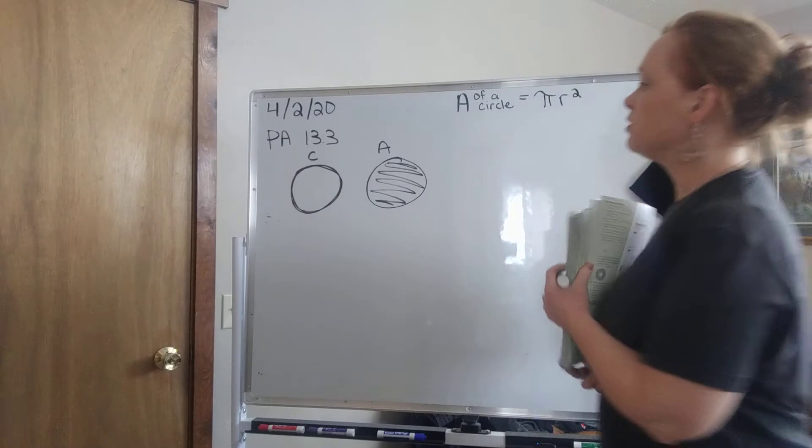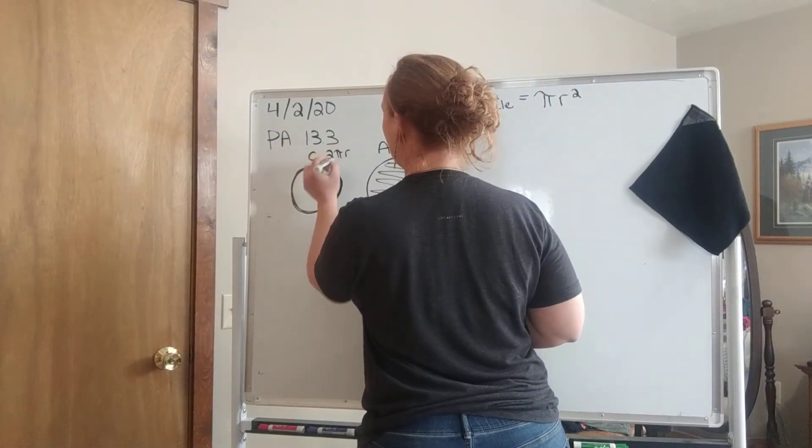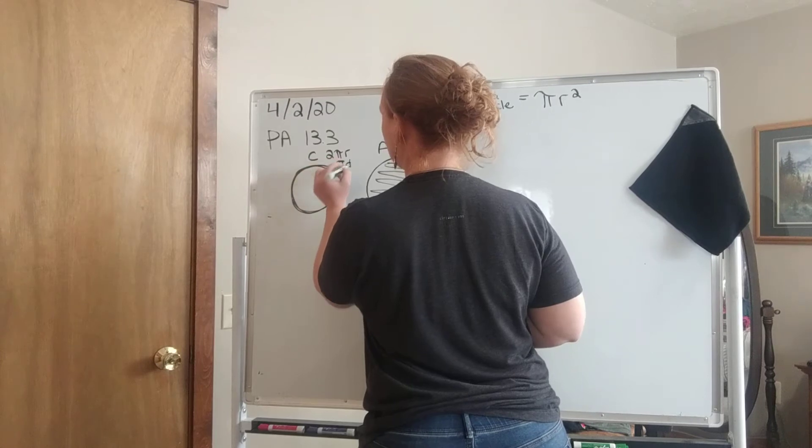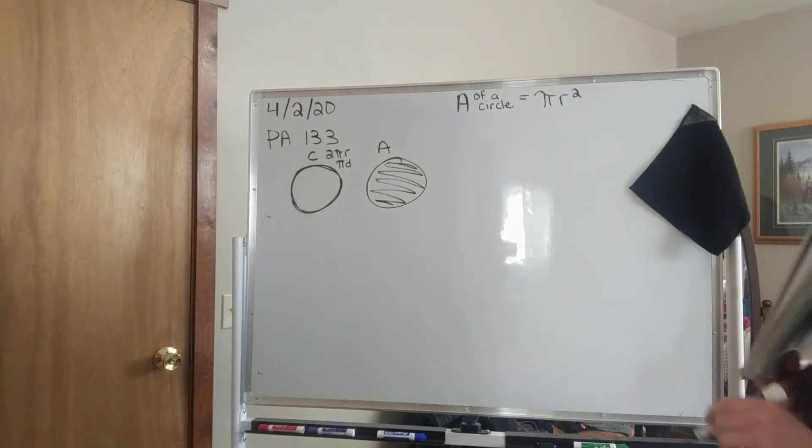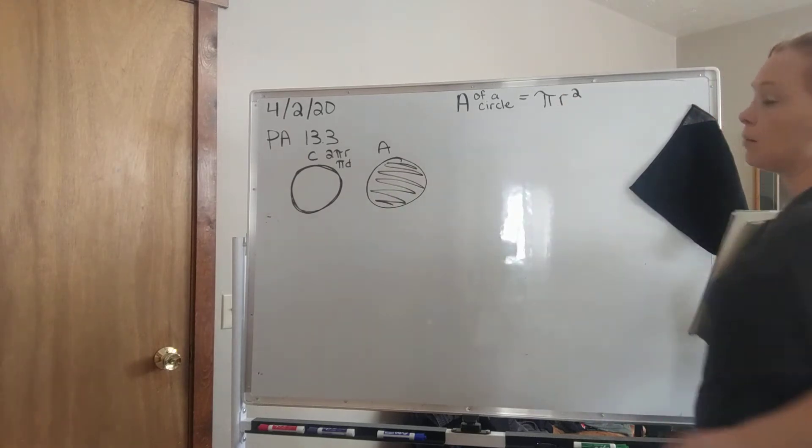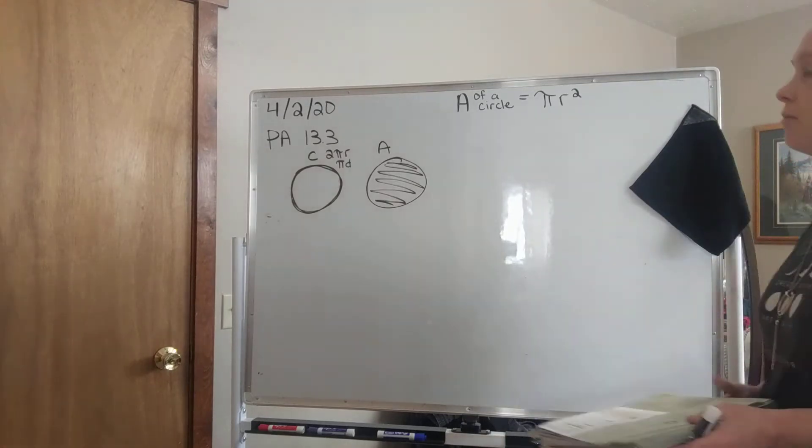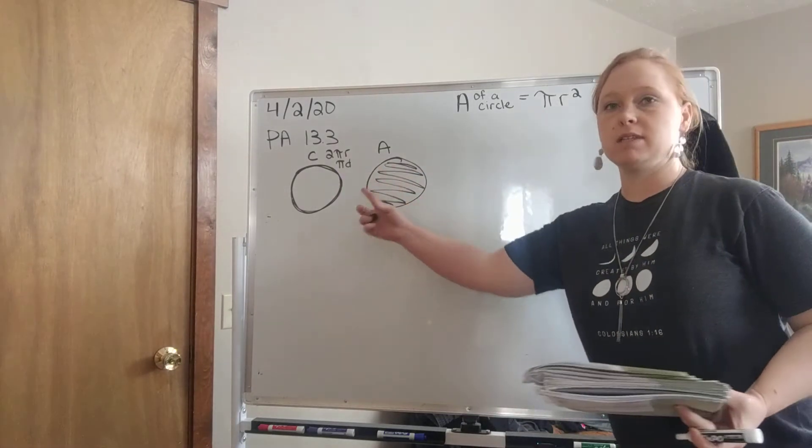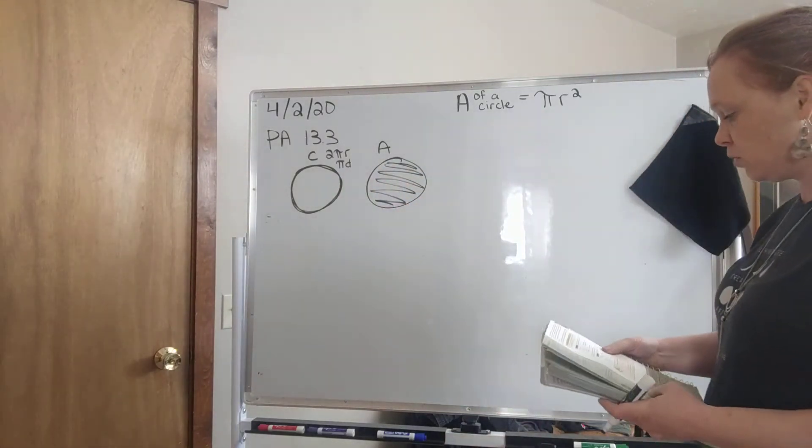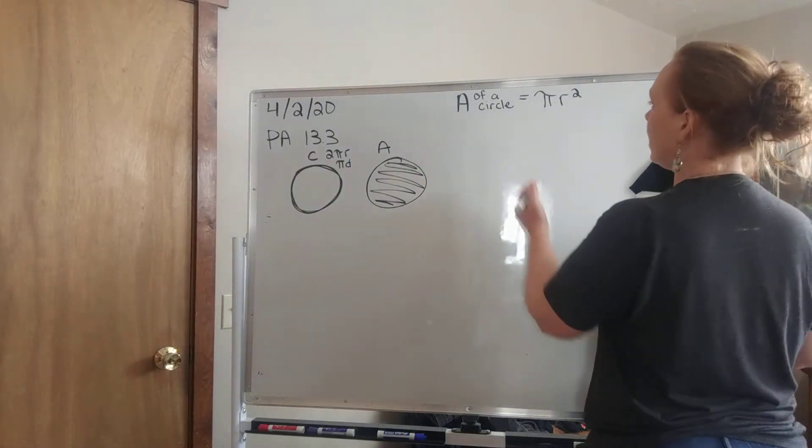Now if you remember, the circumference was 2 pi r or pi d. So they look very similar, right? They have a 2 and a pi and an r, but we have to read this one as squared, pi r squared. So it's kind of hard sometimes to keep those separated as which one is which, and I have to go back and look.